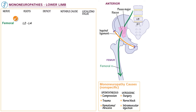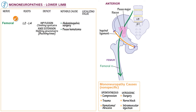Indicate that it's supplied by L2 to L4, and that femoral neuropathy causes hip flexion weakness from iliopsoas failure, which manifests with difficulty climbing stairs, and also knee extension weakness from quadriceps failure, which manifests with difficulty walking downstairs — so-called buckling knee. Notable causes of femoral neuropathy are abdominal pelvic surgery, either from instrumentation or traction, and also psoas muscle hematoma.